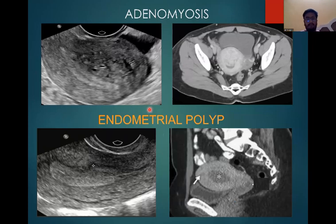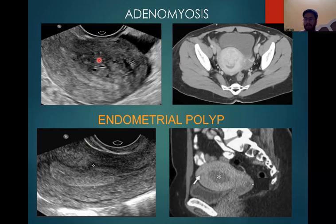Adenomyosis. Adenomyosis is characterized by uterine enlargement and myometrial thickening. There is a myometrial cyst, which is a key specific feature of adenomyosis. An irregular myometrial interface is also a characteristic feature of adenomyosis, which can be seen on imaging including CT.